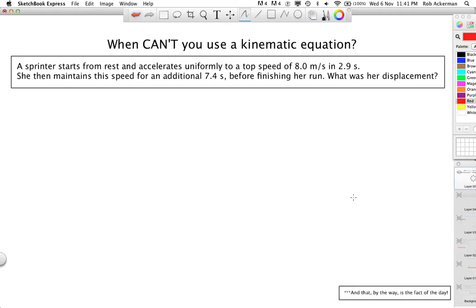Moving along to our final slide. When can't you use a kinematic equation? So it's really important to emphasize you can't always use these. Let me show you an example. We've got a sprinter starting from rest, accelerating uniformly to a top speed of 8 meters per second in 2.9 seconds. So far it sounds good. Uniform acceleration. Why can't you use a kinematic equation here? Well, the problem continues. She then maintains this speed for an additional 7.4 seconds before finishing her run. What is her displacement?